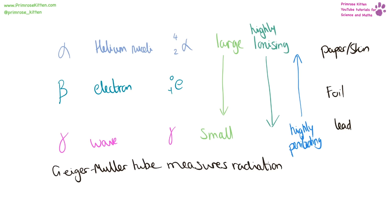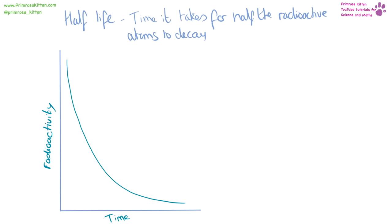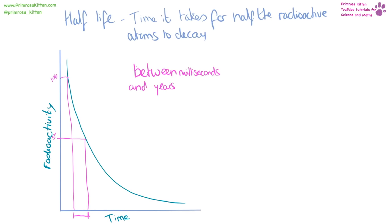A Geiger-Müller tube will measure radiation — it generally clicks every time it detects radiation — and the unit for radiation is the becquerel. A half-life is the time it takes for half the radioactive atoms to decay into something else. We can use a graph: take 100% and 50%, read across with a ruler and down — the time between having 100% activity and 50% activity is the half-life. The half-life of something can range from very quick milliseconds to thousands of years.